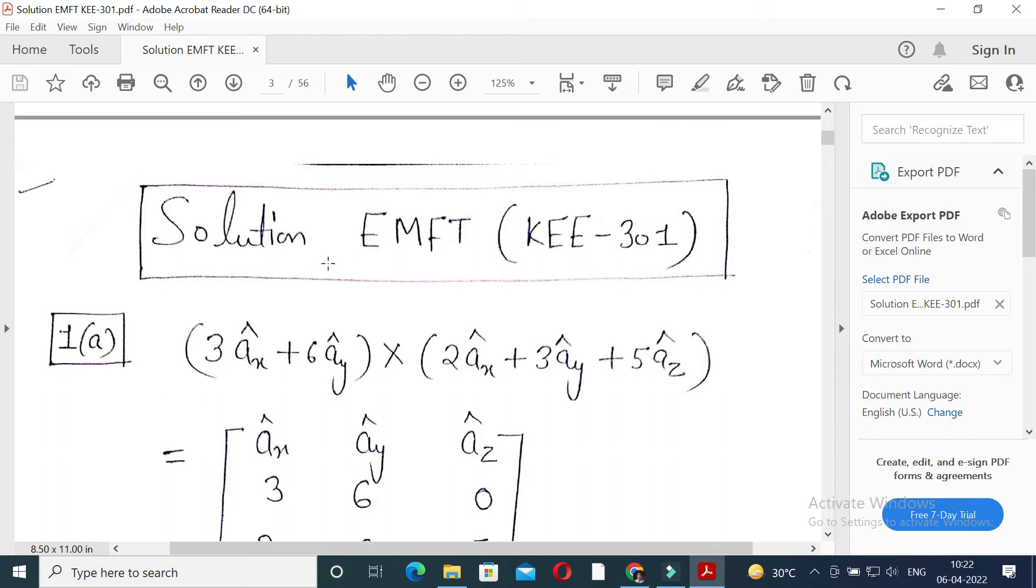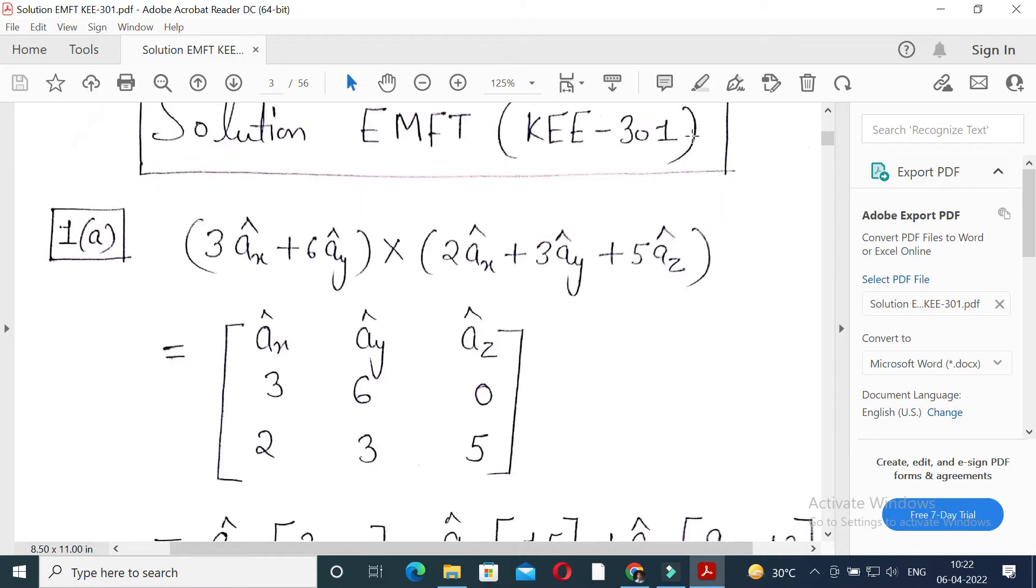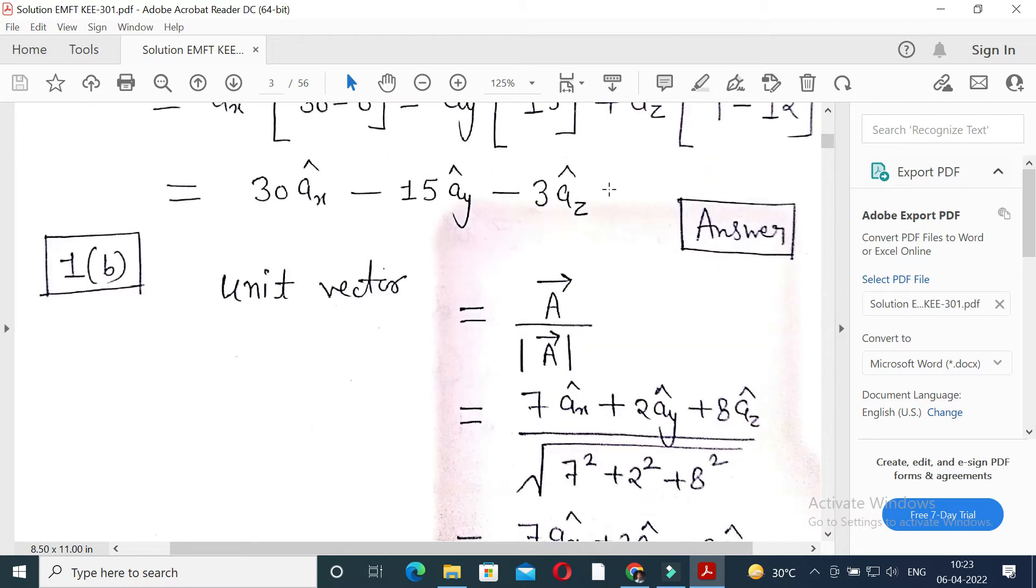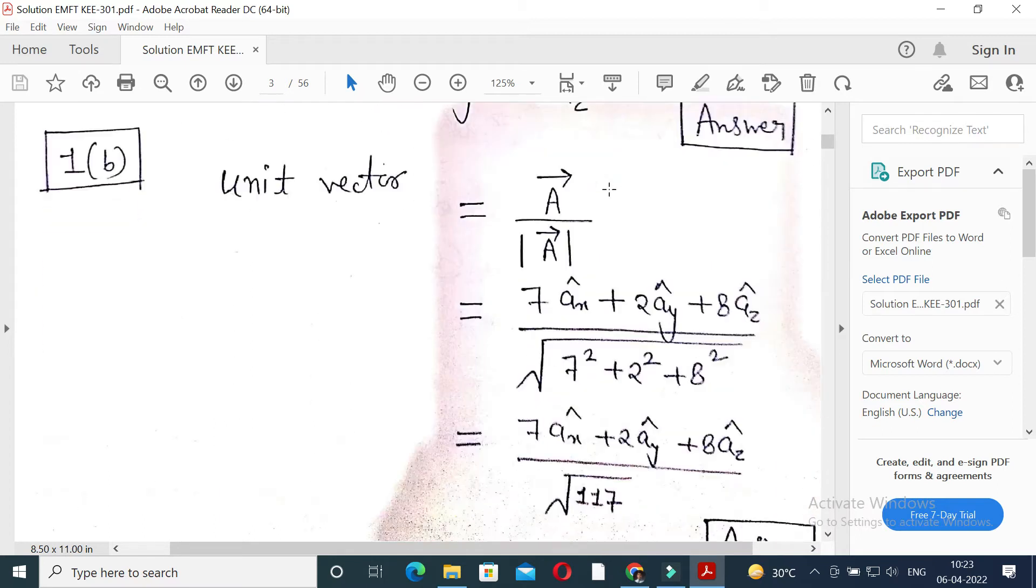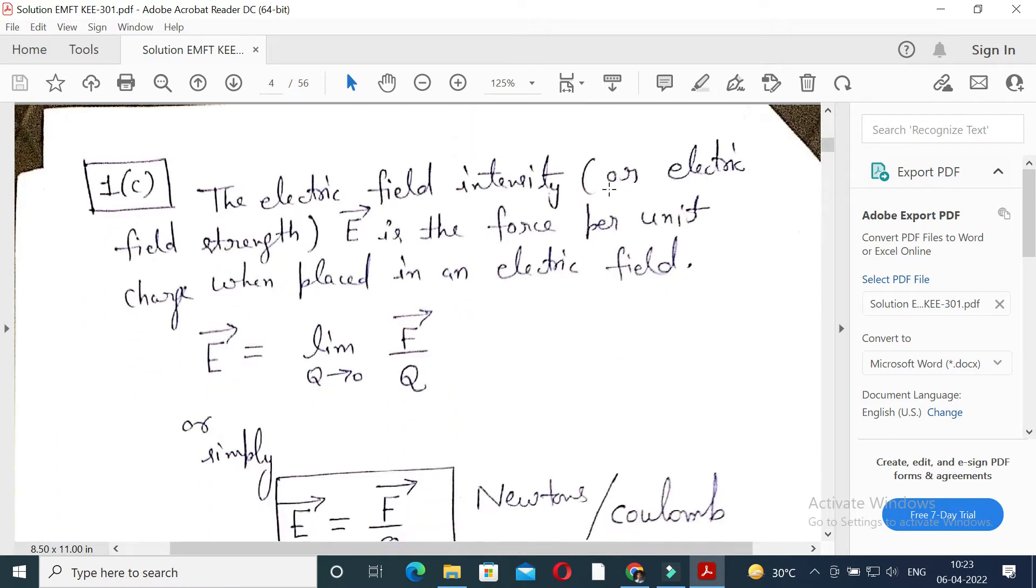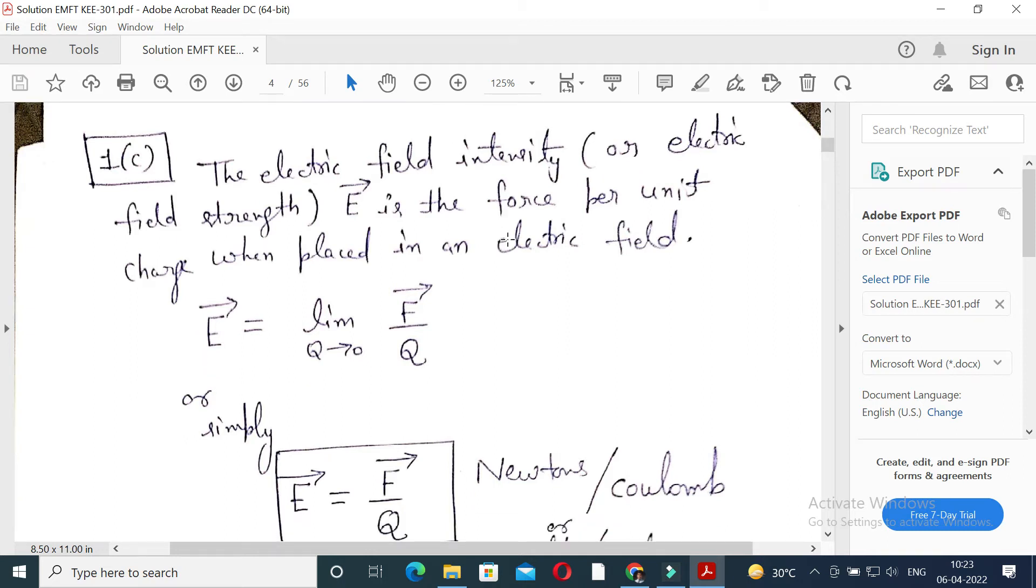So this is the solution of 1a. Solution number 1b: unit vector is asking unit vector on the electric field intensity. We know electric field intensity is the ratio of force to the charge, force per unit charge.